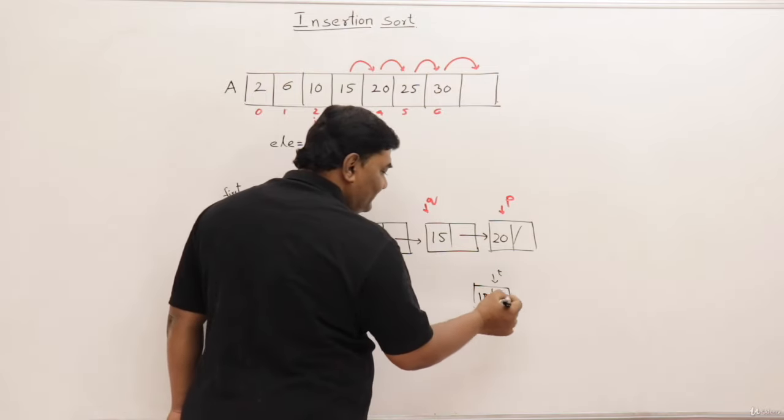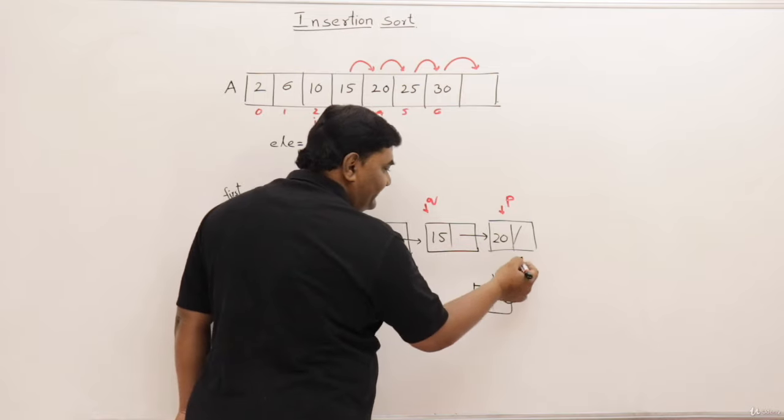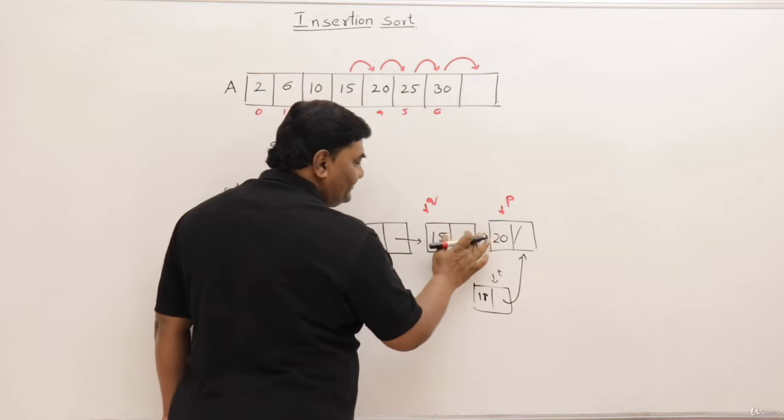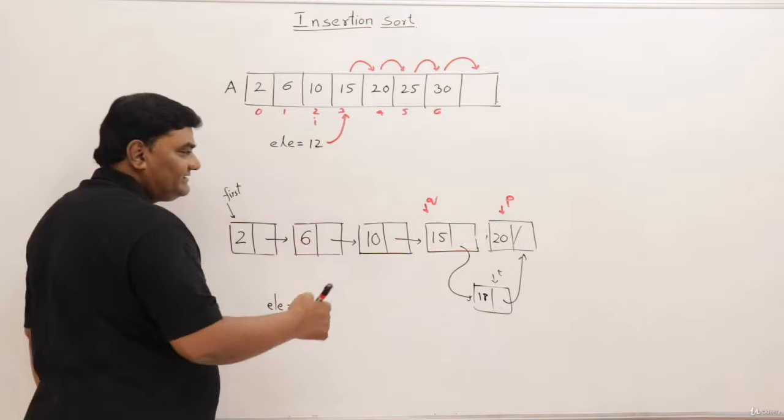Insert this value 18. Then make this T's next point on P and Q's next point on T. That's all. This is inserted.